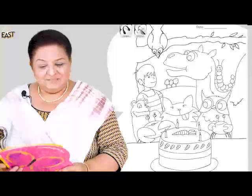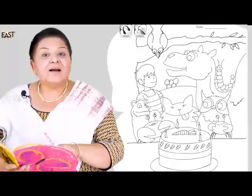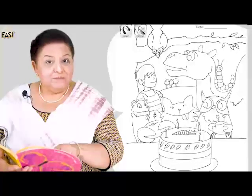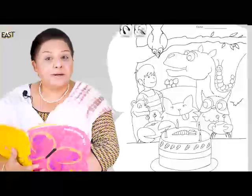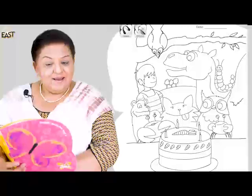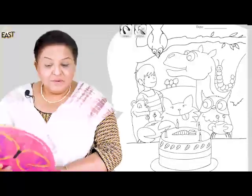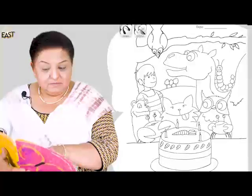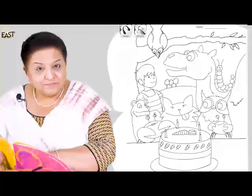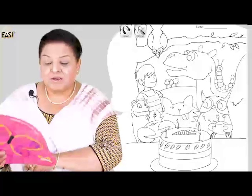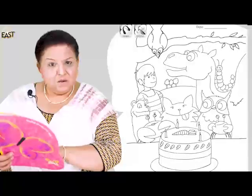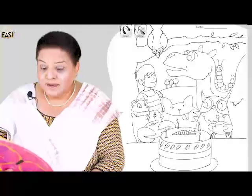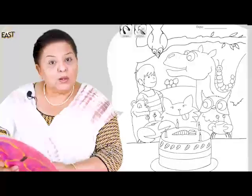Oh look, a crow — a crow is sitting on the branch. And look, we can see a camel with a caterpillar on his back.